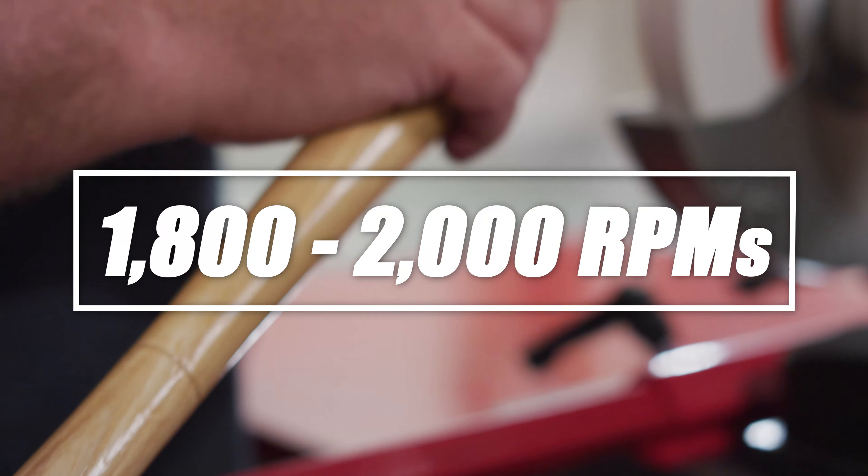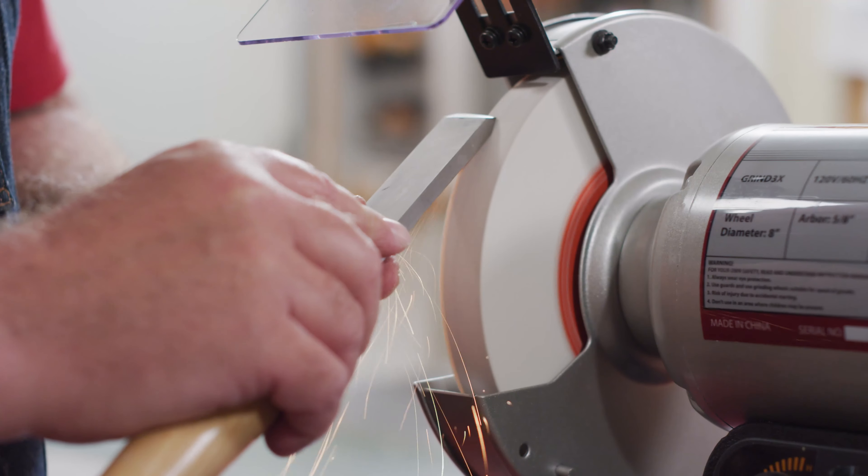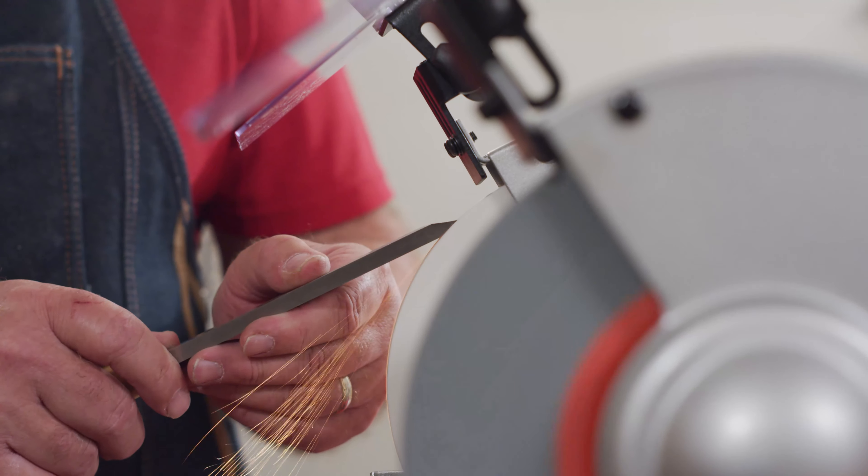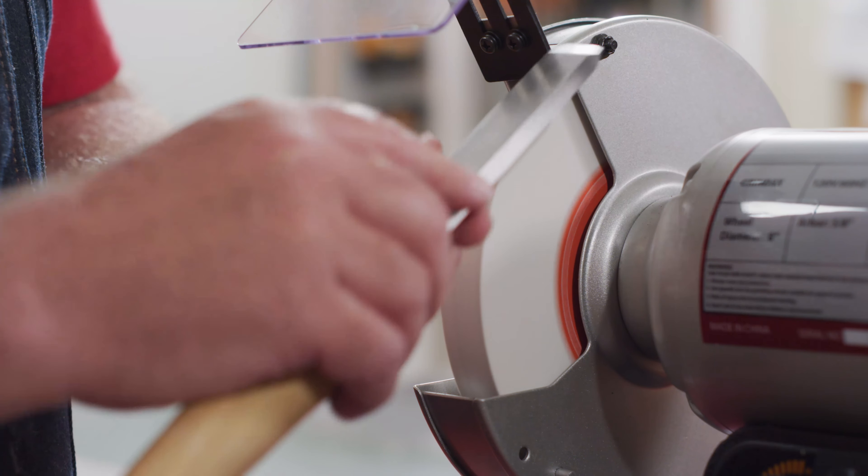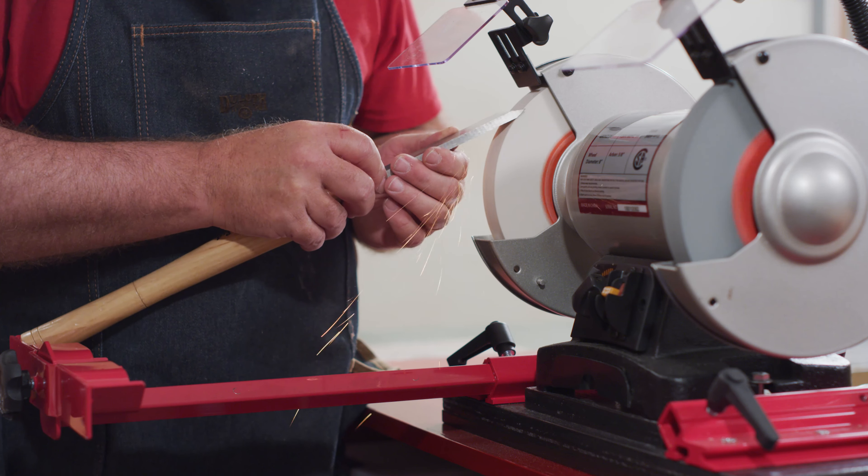Using a grinder speed of about 1800 to 2000 RPMs, slowly move the cutting edge of the skew back and forth until the entire beveled surface has been ground. Flip the tool over, move the handle to the other V pocket and sharpen the opposite bevel.